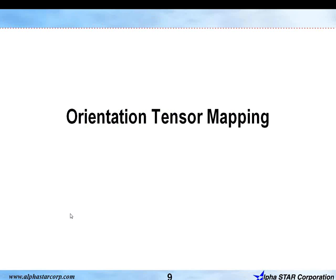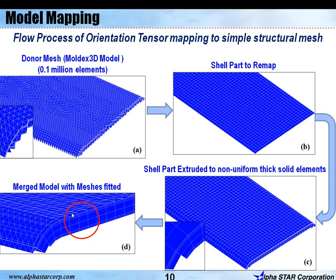Next, I'm going to talk about orientation tensor mapping. Orientation tensor mapping involves a donor mesh, which is an unstructured mesh, and the orientation tensor information available for this donor mesh is mapped into a structural mesh. For example, this is a shell part which will be remapped and extruded to non-uniform solid elements, showing non-uniform solid element distribution through thickness. There is a good match between the donor mesh and the receiver mesh.